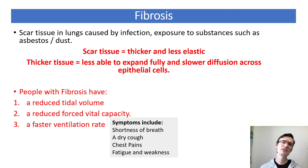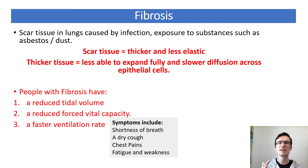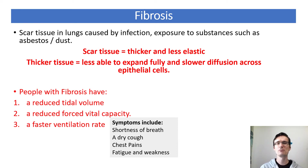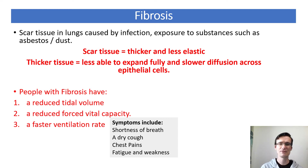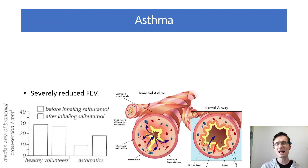Fibrosis is when scar tissue forms, caused by infection or exposure to substances like asbestos and dust. Scar tissue means thicker, less elastic tissue, which reduces the ability for diffusion across the alveoli. People with fibrosis generally have a reduced tidal volume — they can't get as much air into the lungs — a reduced forced vital capacity, a faster ventilation rate, and suffer from shortness of breath, dry cough, chest pains, and fatigue.